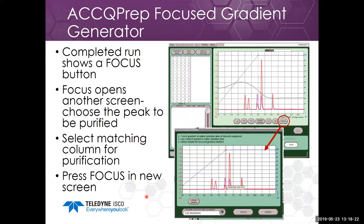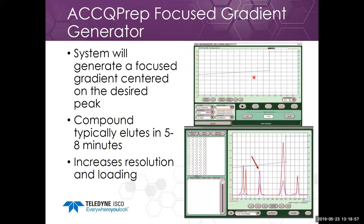The focus gradient generator will then run your mixture, and the completed run will show a Focus button. Focus will open another screen that allows you to choose the peak to be purified. You choose your matching column with the same chemistry for your final purification, drag your finger to choose the peak, press Focus in the new screen, and it will generate a focused gradient for you.